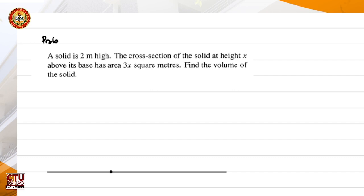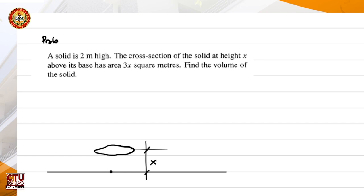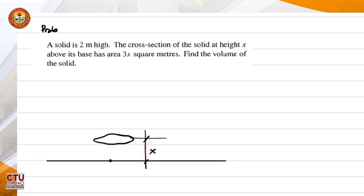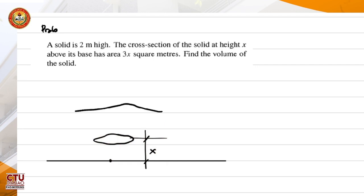As we go above at a distance x, the area becomes 3x. So as this height increases, so does the area — it increases three times the height. That means if x is larger, the area is much bigger than near the base. We can visualize the cross-sectional area increasing as we move up, and we could imagine the solid as this shape.